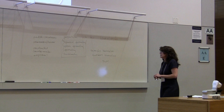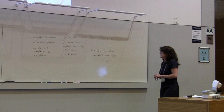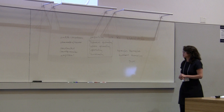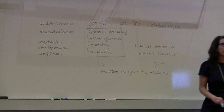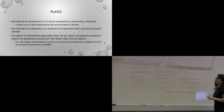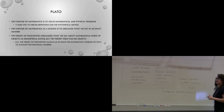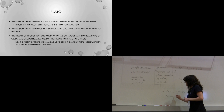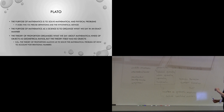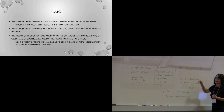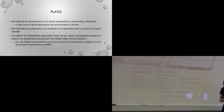More importantly, what a theory of proportion — and in fact it's a geometric theory of proportion as opposed to an arithmetic one — what a geometric theory of proportion allows us to do is organize arithmetic so that we get numbers as geometric measures, as opposed to numbers as arithmetic numbers. And what that allows us to do, interestingly enough, is to include irrational numbers. So what the theory of proportion does is it allows us both to organize our mathematical kinds of objects and to solve mathematical problems.